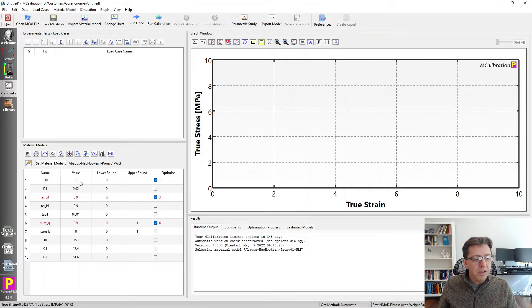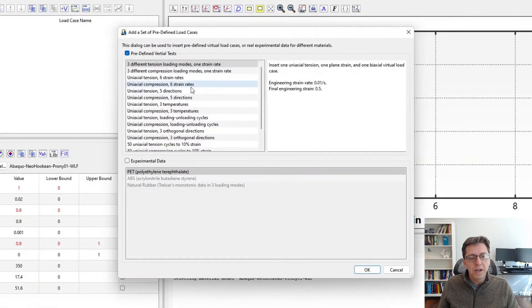So here is the hyperelastic component. Then we have the Prony series. And the last three parameters here are the WLF equations, T0, C1, and C2. So we want to examine this. One way to do it is I'm going to define uniaxial tension, six different strain rates.